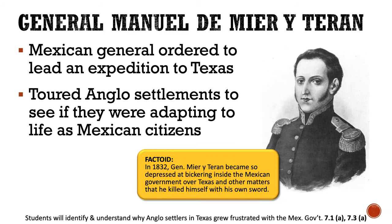An interesting factoid: in 1832, about four years after Mier y Terán toured Texas, he became so depressed at the bickering inside the Mexican government over Texas and other matters that he killed himself with his own sword. It's a depressing note, but the man who led this important expedition to Texas for the Mexican government ended up taking his own life because the Mexican government couldn't agree on things.